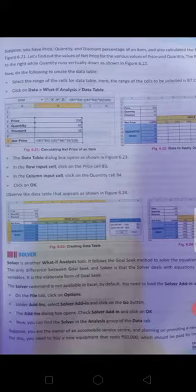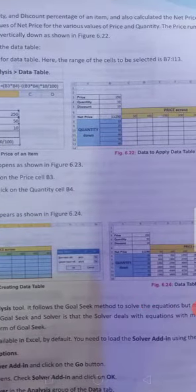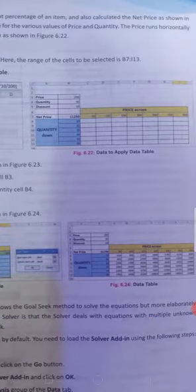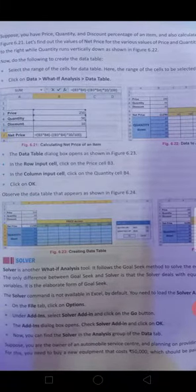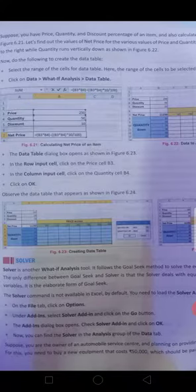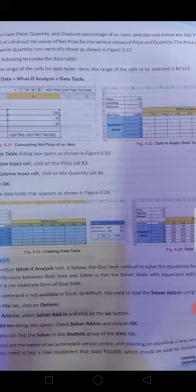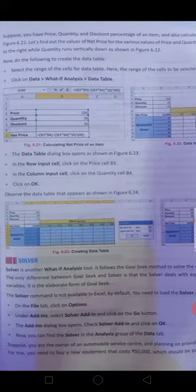No need to make scenario for different banks, we just set up the data and we can collect our output. Now how we do, select the range of the cells for data table. Here the range of the cells to be selected is B7 to I13. Click on data, what-if analysis, data table. Now data table dialog box opens. Now row input cell, click on the price cell B3. B3 is the price.